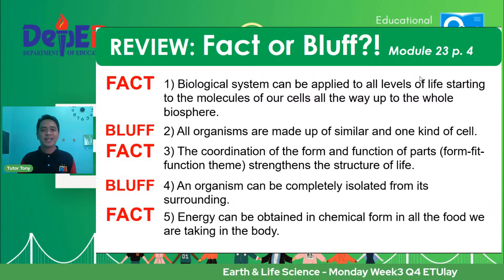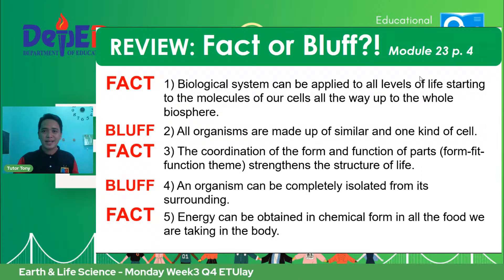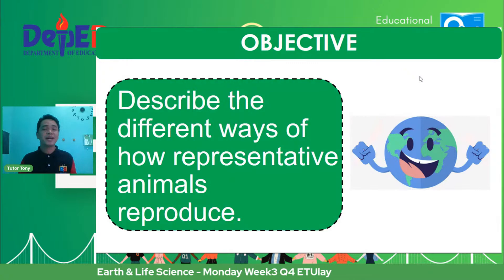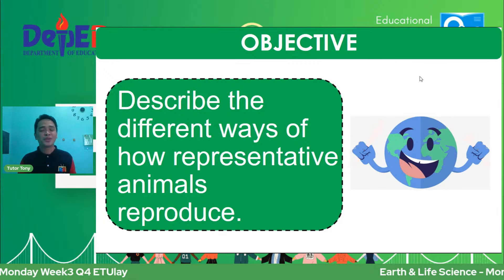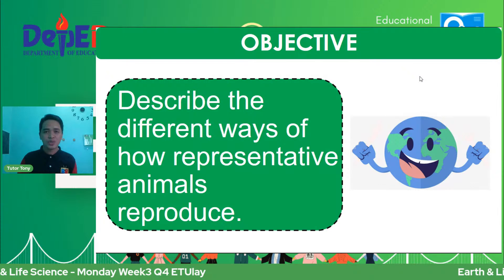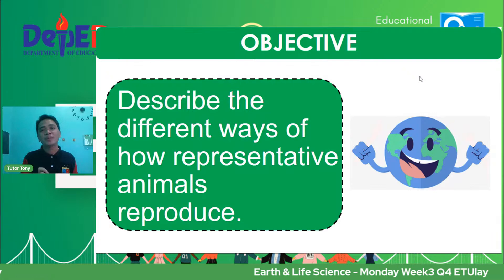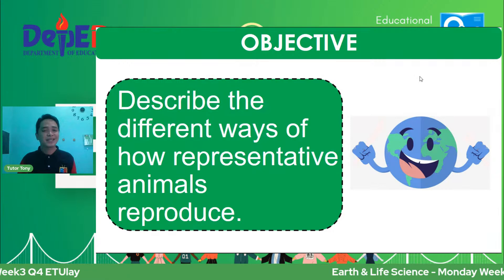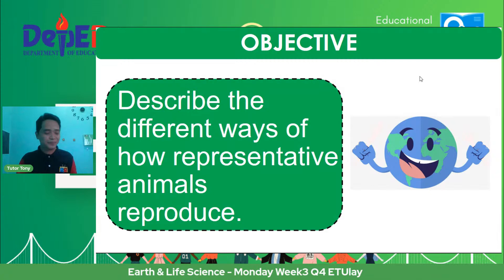JJ, sana samahan mo ako hanggang 4:40. Our viewers, make sure to like, heart-react, and share our livestream para mas marami pa tayong maabot at patuloy nating maitulay ang pagkatuto ngayong pandemia. For this session, we only have one objective: to describe the different ways of how representative animals reproduce. When we say representative animals, mag-mention lang ako ng specific samples of animals that exhibit that particular kind of reproduction.